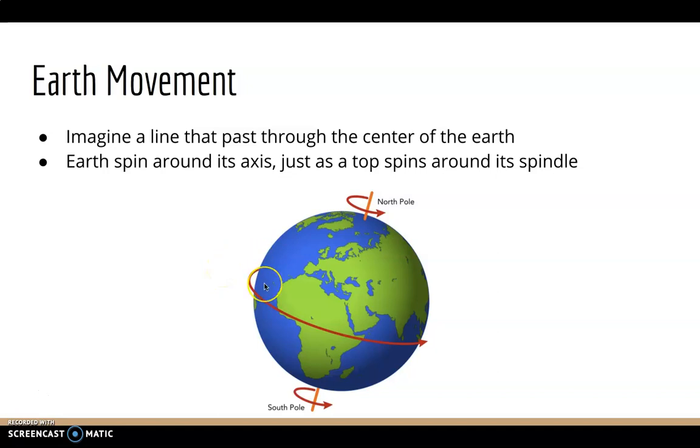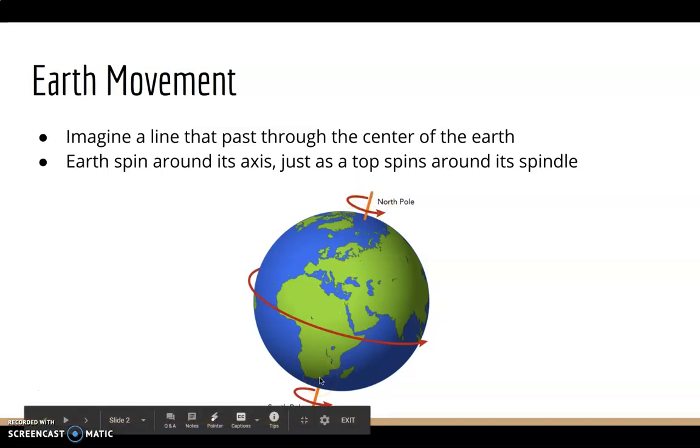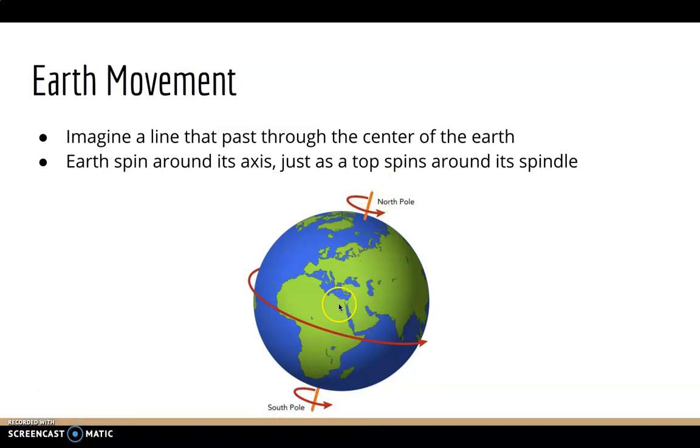So imagine like there's a line passing through the center of the Earth and goes through both the North Pole and South Pole. This imaginary line is called the axis, and the Earth spins around its axis.